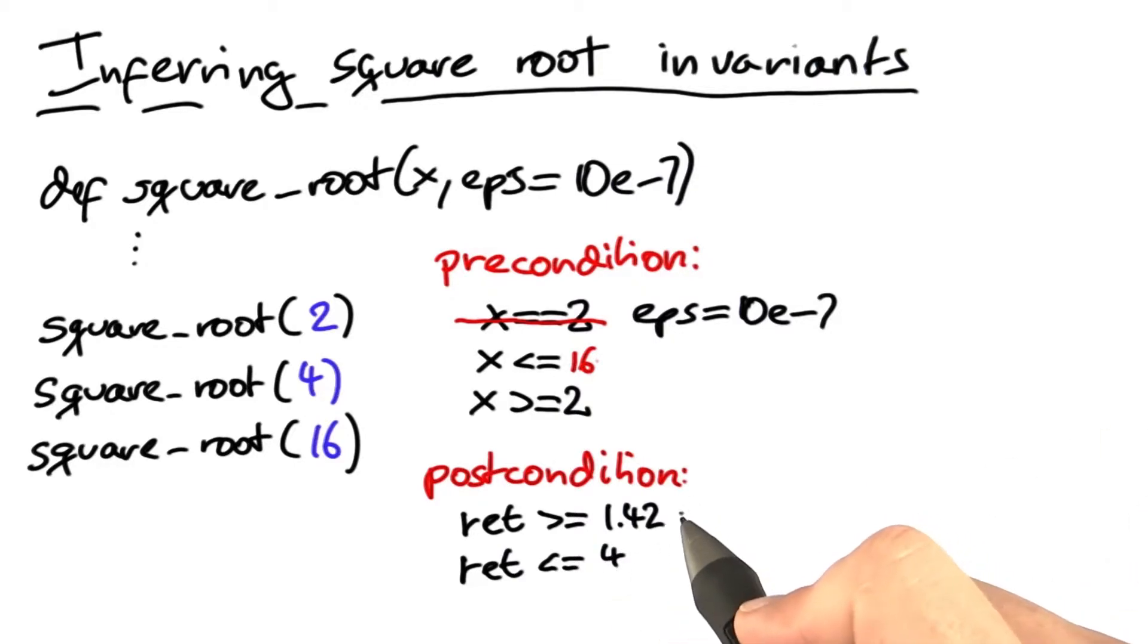For the post condition, we get similar ranges for the return value. The return value is between the square root of 2 and 4, which is the square root of 16.